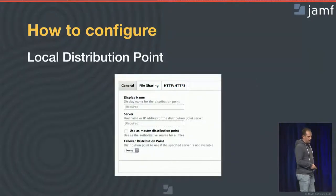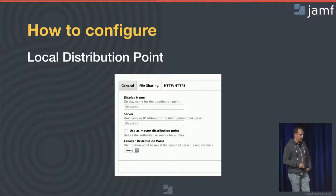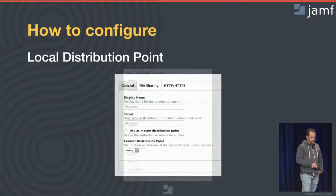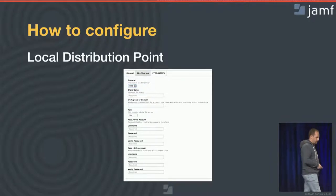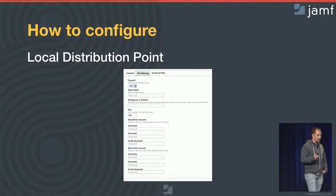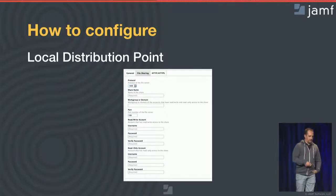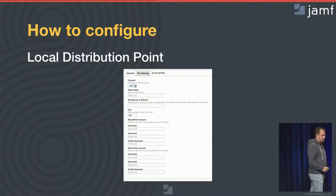For local file shares, first you give it an internal reference name, put in the hostname and IP address, select whether or not it's going to be your master, and select a failover for this specific distribution point. On the second tab, you select the protocol — SMB or AFP — the share name, whether or not you're using a workgroup or domain, and then two user accounts. By preference, service accounts: one with read-only access to your file share, and another with read and write. When using Casper Admin, it will use the read/write account to upload content, and end users downloading through a policy will use the read-only account.